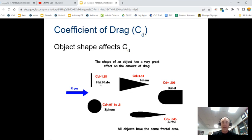Now, note, all of these objects have the same frontal area. So they're scaled down a little bit. I know this airfoil looks quite a bit smaller. But the frontal area of this is supposed to be the same as a frontal area of the prism and bullet and sphere and flat plate.